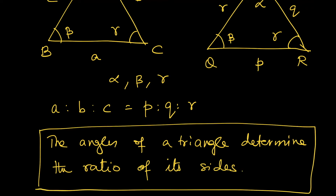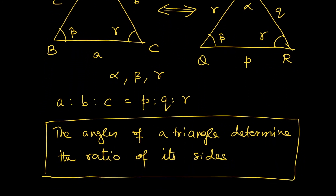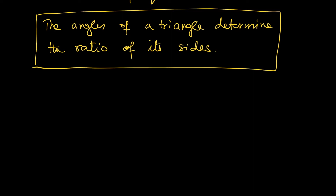Now if you change a triangle without changing the angles, the ratio of the sides will remain the same. Unless it's a standard triangle like an equilateral or a right-angled triangle, it is not very easy to compute the ratio of the sides from the angles. However, mathematicians from very early times found techniques to compute such ratios for right-angled triangles and arranged them in special tables. For example, these tables show that for a right-angled triangle in which one angle is 40 degrees, the side opposite to this angle is approximately 0.6428 times the hypotenuse, and the other perpendicular side is approximately 0.7660 times the hypotenuse.